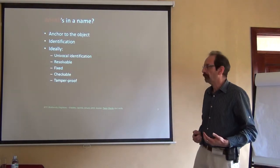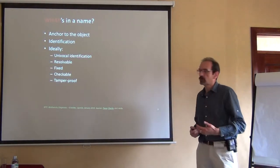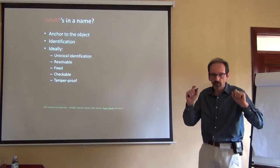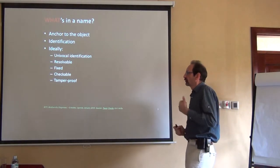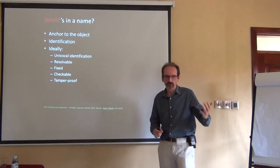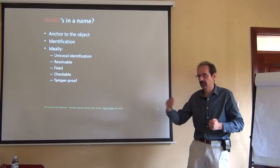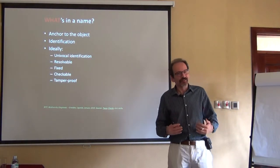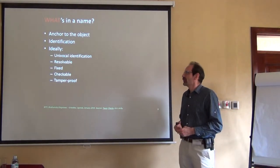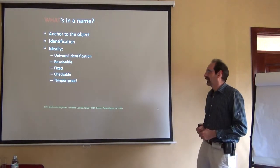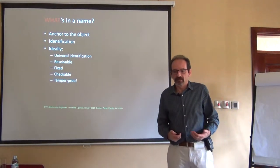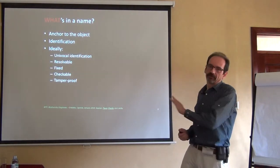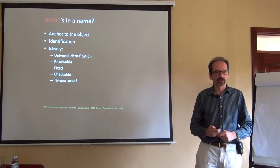Ideally, a name should be a univocal identification — it should be associated with one single entity. It should be resolvable, so the name should get us to the actual identity of the object. It should ideally be fixed, although it never is. It should be able to be checked, and if possible, tamper-proof. Almost none of this happens in the biodiversity realm.